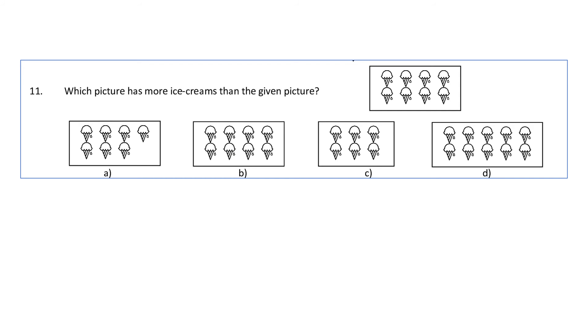Which picture has more number of ice creams than the given picture? We'll first count the ice creams in each picture. In this picture, there are 1, 2, 3, 4, 5, 6, 7, 8 ice creams. So we have to check which picture has more than 8 ice creams. That will be the answer. In option A, there are 1, 2, 3, 4, 5, 6, 7 ice creams.